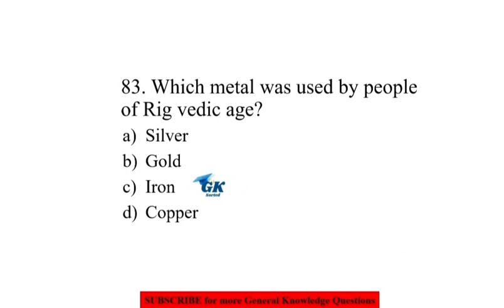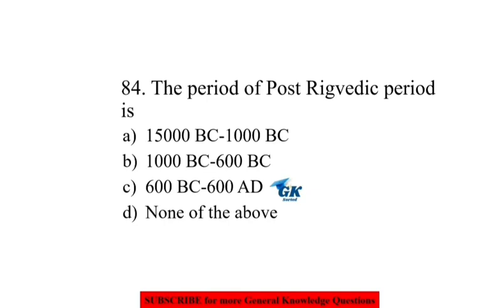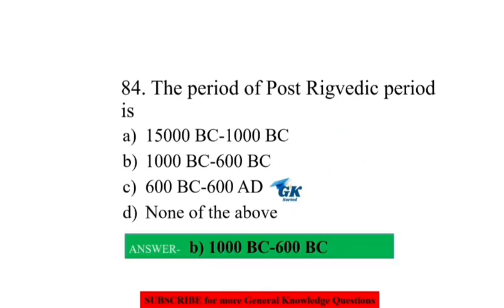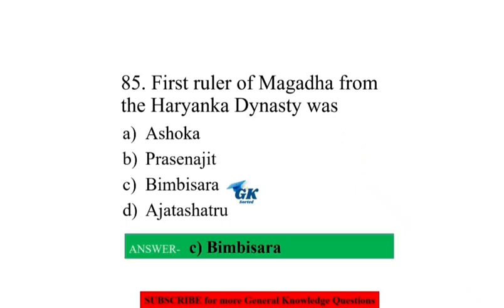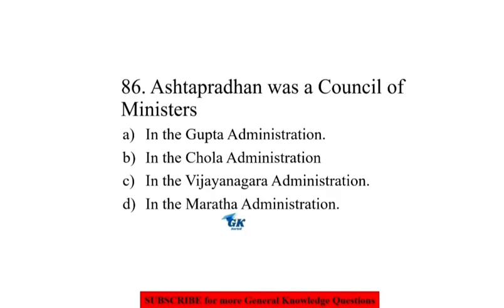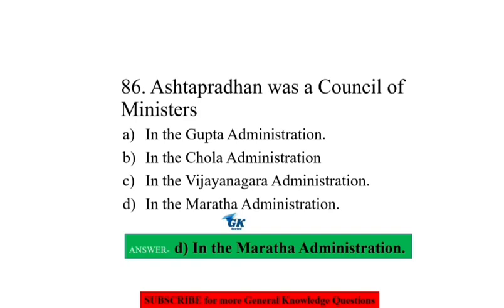Which metal was used by people of the Rig Vedic Age? Copper. The period of the post-Rig Vedic period is 1000 BC to 600 BC. The first ruler of Magadha from the Haryanka dynasty was Bimbisara. The Ashtapradhan was a council of ministers in the Maratha administration.